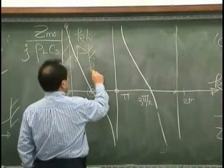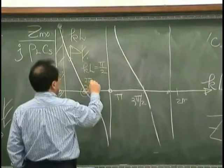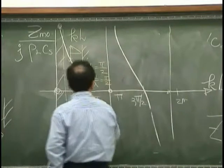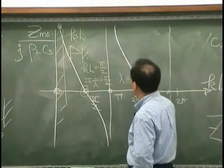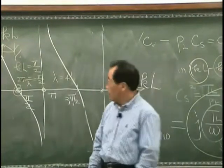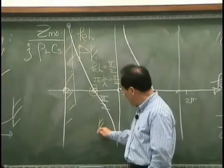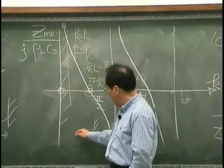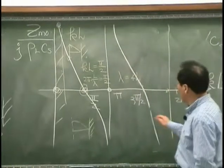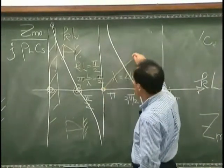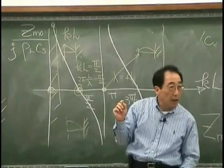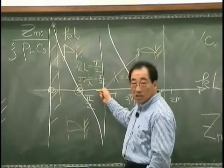What happens when KL is π/2? If I substitute K = 2π/λ, then (2π/λ)·L = π/2, which gives λ = 4L. So the wavelength is a quarter wavelength. And at this point, the impedance is infinity.